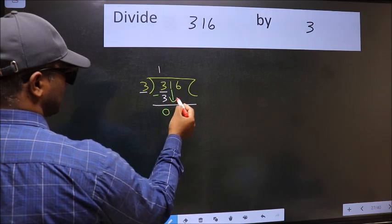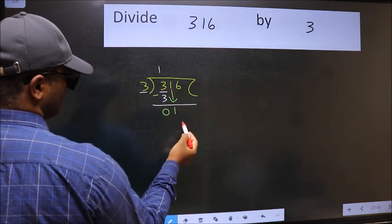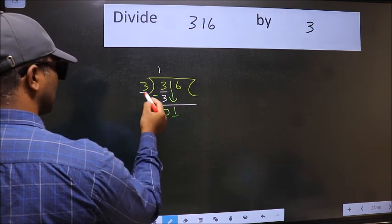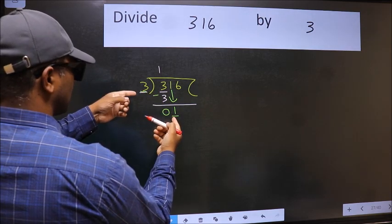After this, bring down the beside number. So 1 down. Now here we have 1 and here 3. 1 is smaller than 3.